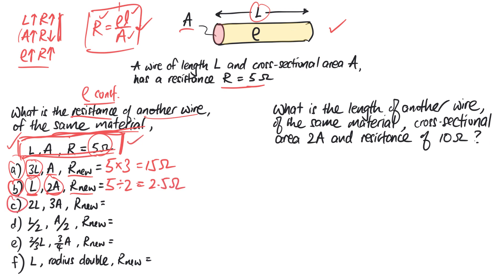For wire C — two times longer and three times the cross-sectional area. Starting with the original 5 ohms: double the length doubles the resistance (×2), and three times the area reduces resistance (×1/3). So 5 × 2 × (1/3) = 3.3 ohms.